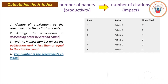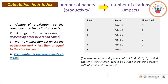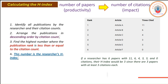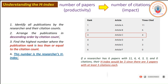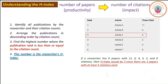Here is an example. The author has six publications with citations as follows: rank 1 has 11 citations, rank 2 has 6, rank 3 has 4, rank 4 has 3, rank 5 has 3, and rank 6 has 0. Checking each rank: rank 1 — 1 paper has 11 or more citations ✓; rank 2 — 2 papers have 6 or more ✓; rank 3 — 3 papers have 4 or more ✓; rank 4 — 4 papers have only 3 citations, which is not 4 or more. Therefore, the H-index is 3.